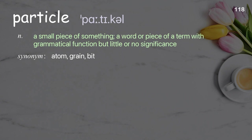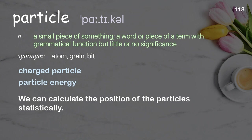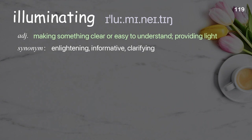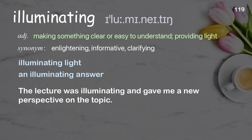Particle: a small piece of something; a word or piece of a term with grammatical function but little or no significance. Examples: charged particle, particle energy. We can calculate the position of the particle statistically. Illuminating: making something clear or easy to understand; providing light. Examples: illuminating light, an illuminating answer. The lecture was illuminating and gave me a new perspective on the topic.